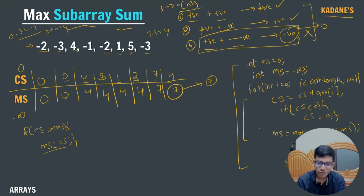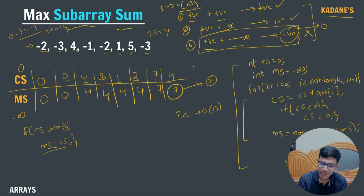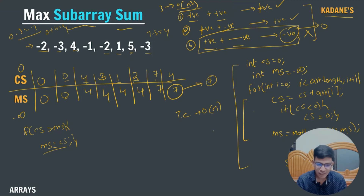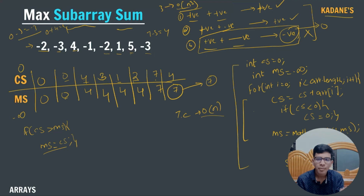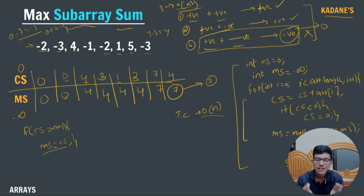Kadane's algorithm is one of the most asked questions in interviews and placement. Remember this algorithm — it's just four to five lines of code but contains a lot of logic. The key insight: when we get a negative number, don't consider it and replace it with zero. This is the main fundamental logic of Kadane's algorithm.